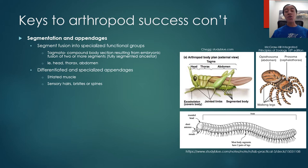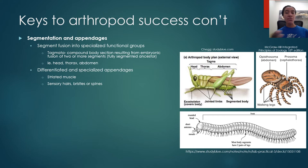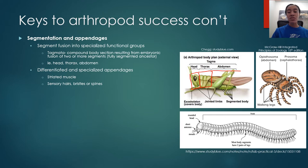Other adaptations that have contributed to arthropod success include segmentation and the development of specialized appendages. Segmentation in arthropods differs from annelids because the segments have become fused into specialized functional groups called tagmata. All arthropods came from a fully segmented ancestor, but in modern arthropods during embryonic development, two or more segments fuse into combined segments with specialized functions. One familiar example is the head-thorax-abdomen segmentation seen in this grasshopper - three tagmata with the head, thorax just posterior to it, and the abdomen posterior to the thorax.